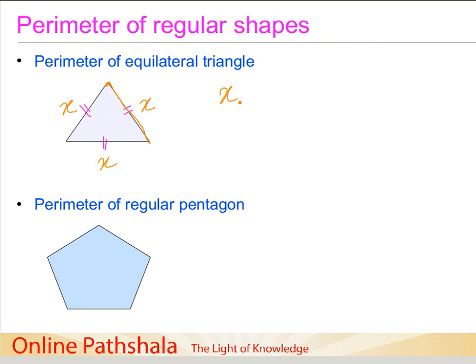Then from here to this point, that is again x. And then when we come back to our starting point, we have again covered a distance of x. So the perimeter of an equilateral triangle is 3x, or if you choose l, it will be 3l, whatever letter you choose to represent the length. The sides are 3 and length is x.